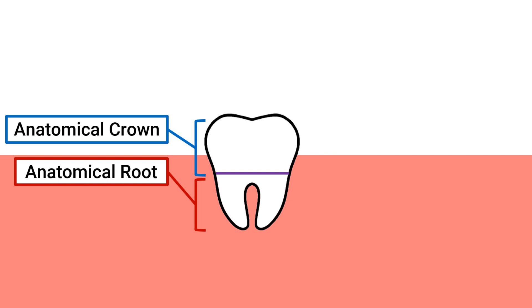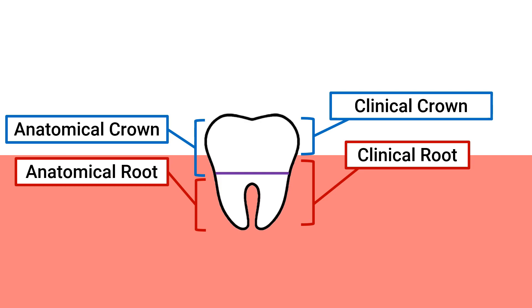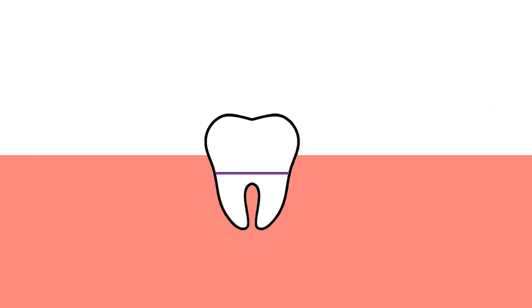Notice that because the anatomical crown and root use the CEJ as the reference point, it will always be the same amount, no matter how deeply or superficially the tooth is embedded into the gums. On the other hand, our clinical crown is now smaller than before and is smaller than the anatomical crown. As a result, we have gained significantly more clinical root, which is now larger than the anatomical root.